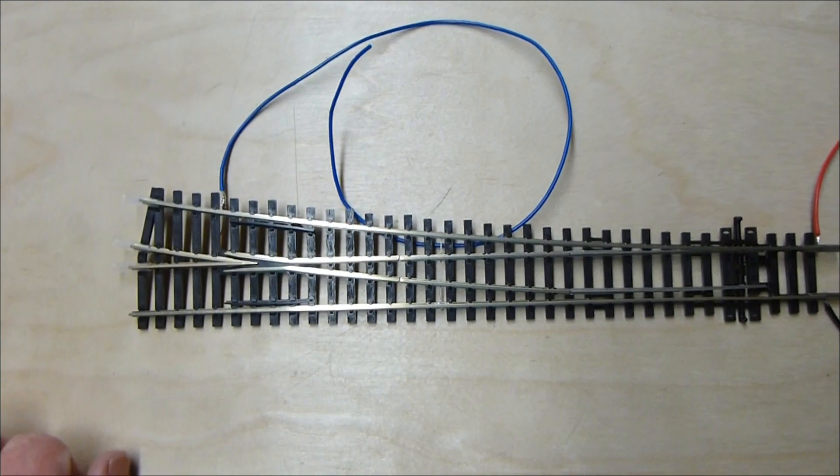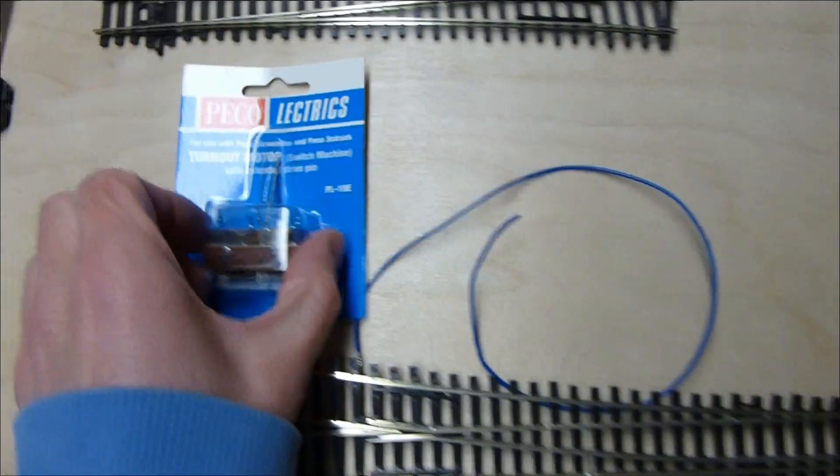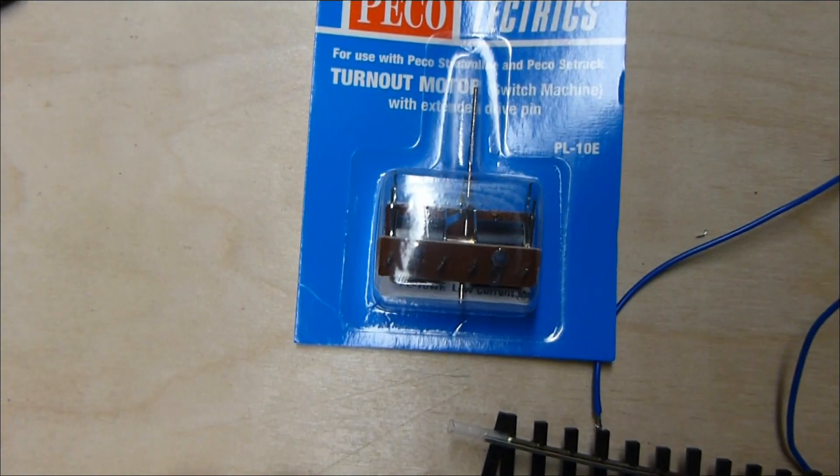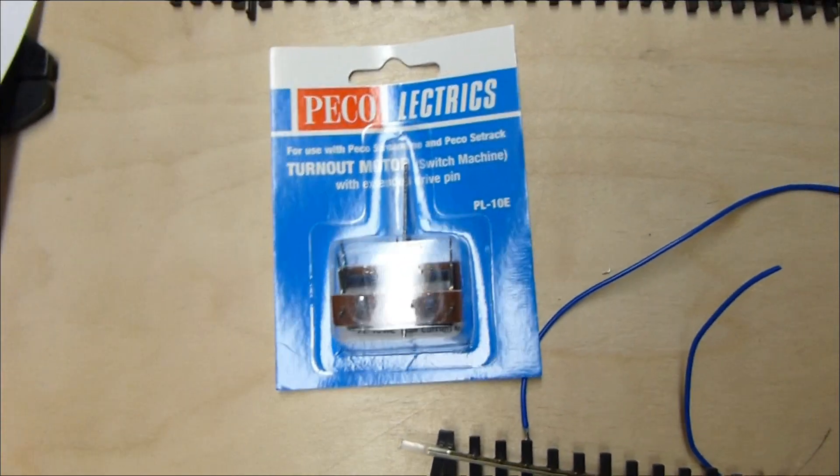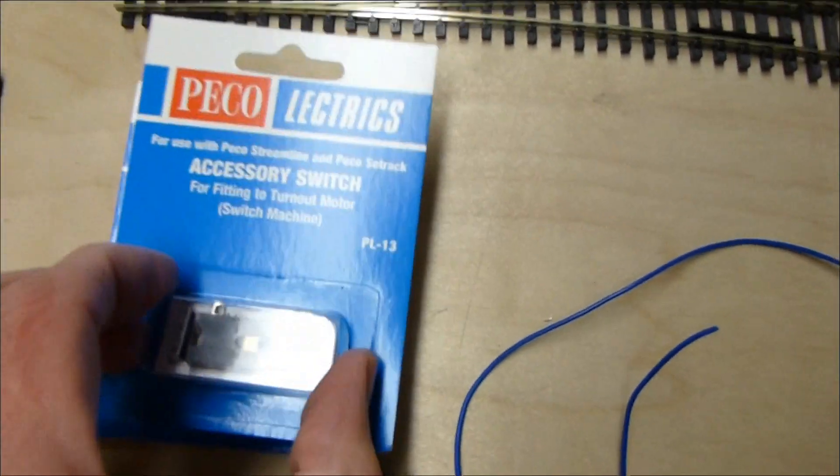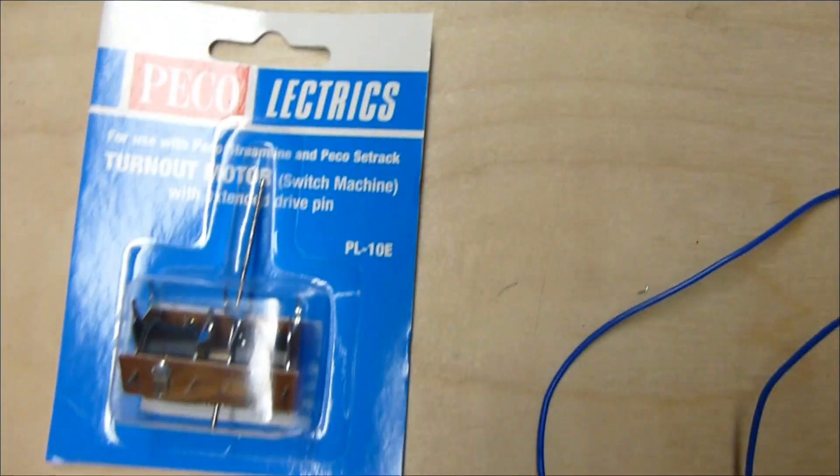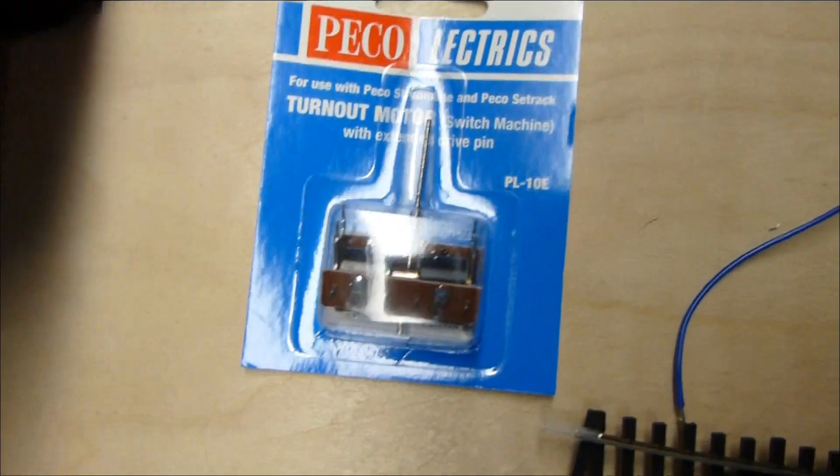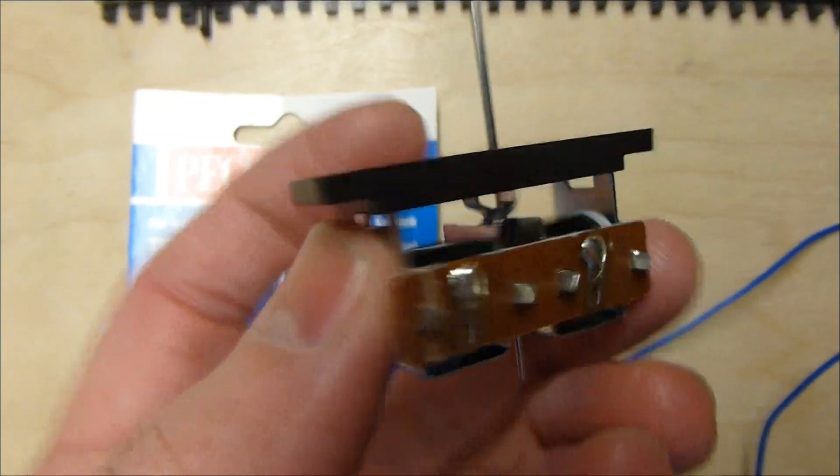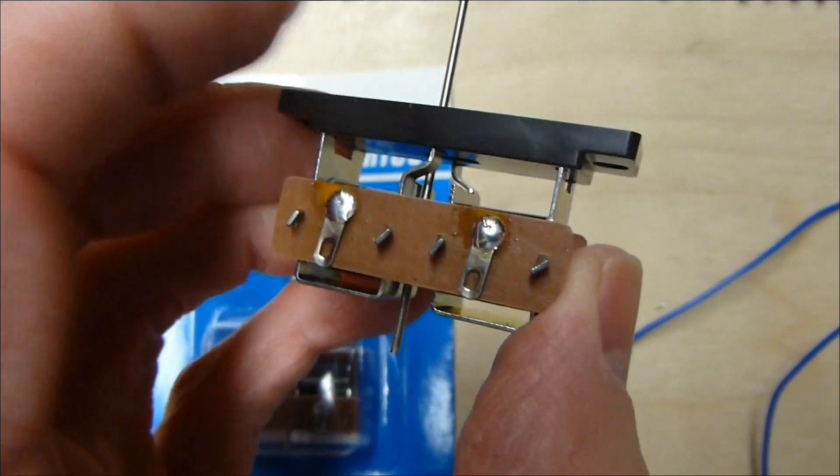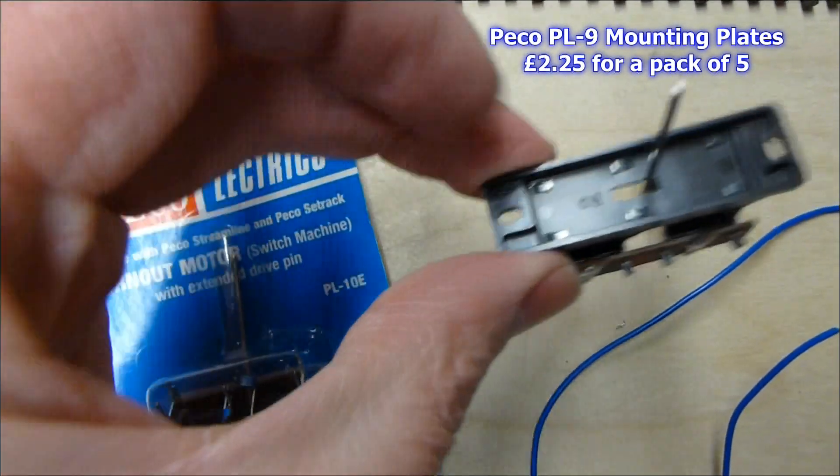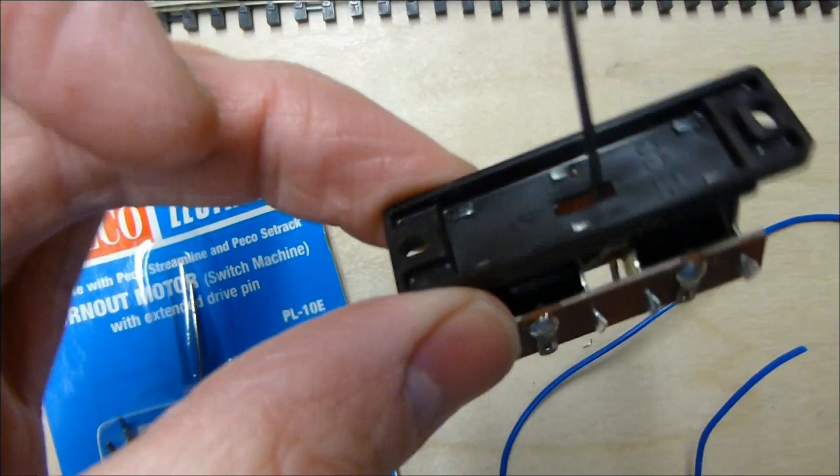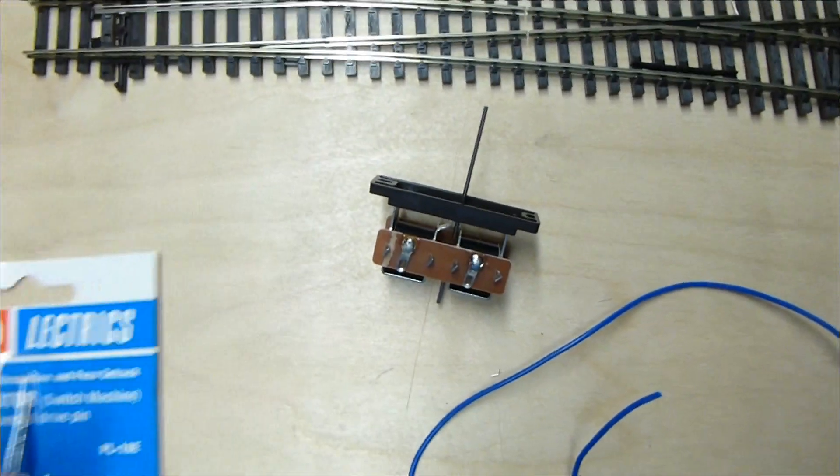So we've got our point prepared for DCC. Now, the motor I'm using is a PL10E extended pin, which gets right through my baseboard, which is 9mm thick ply. The accessory switch goes onto that, and if you're mounting it under the baseboard, you need a mounting plate. You buy these in packs of five supplied with screws, and these simply fit on underneath, and you bend over the links there so it doesn't come out. So that's set ready to be put under.